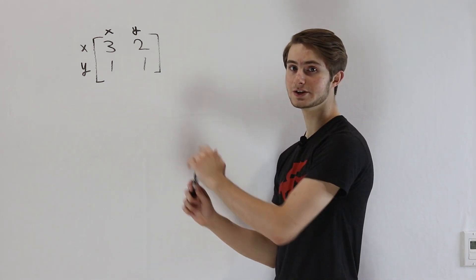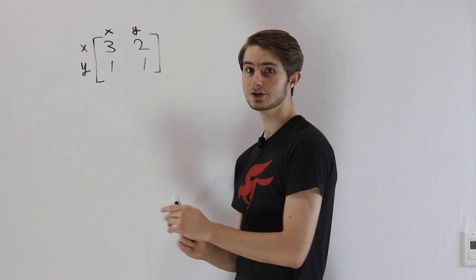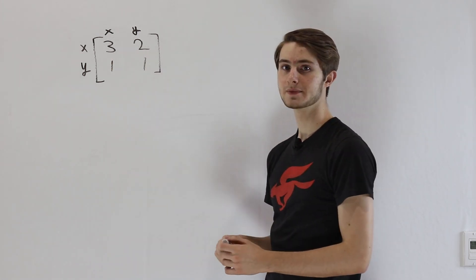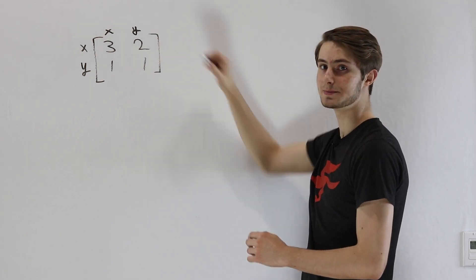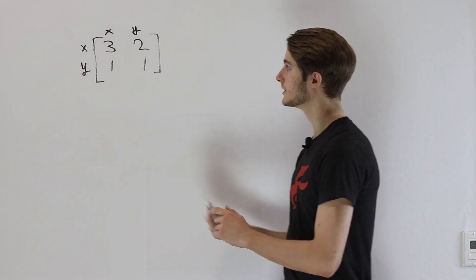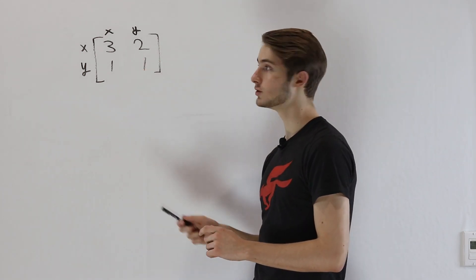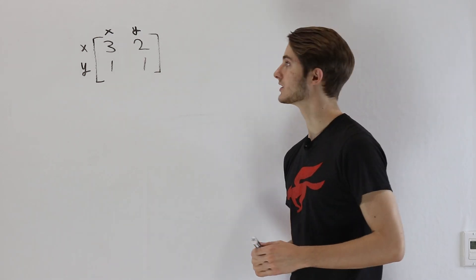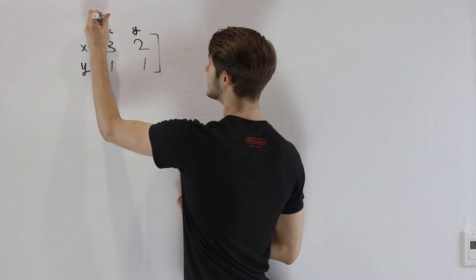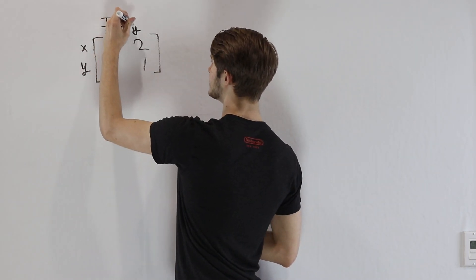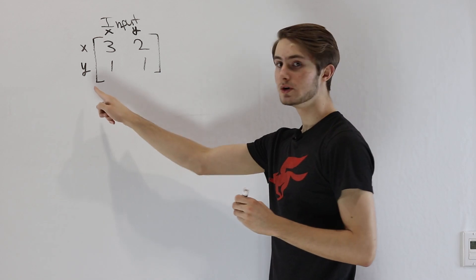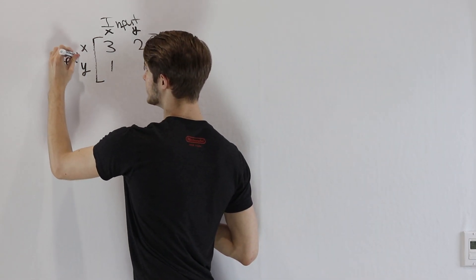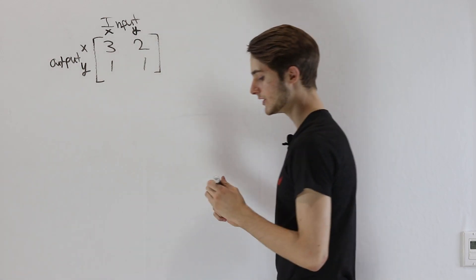When we look at a matrix, in this case a 2x2 matrix, we see two columns that represent x and y, and we also see two rows that represent x and y. But the column and the specific row of a particular number represent very important things. The column that a number is in represents the input and the row that a number is in represents the output. So what does that mean?